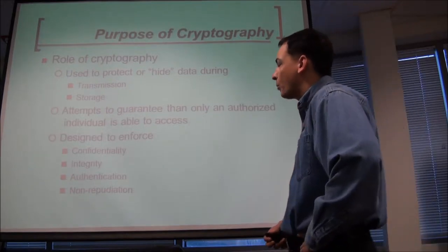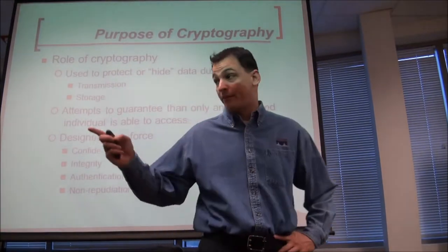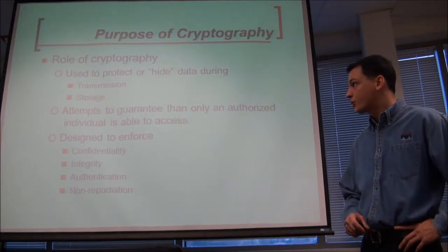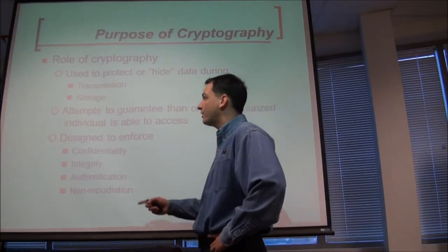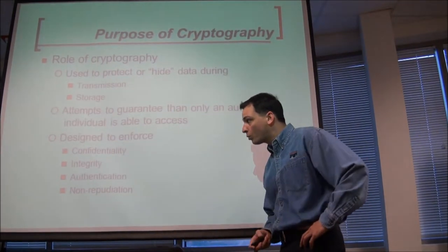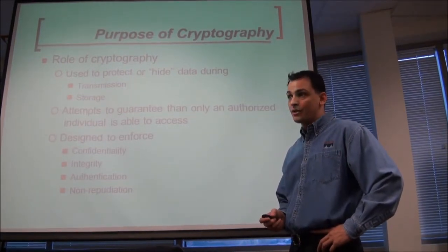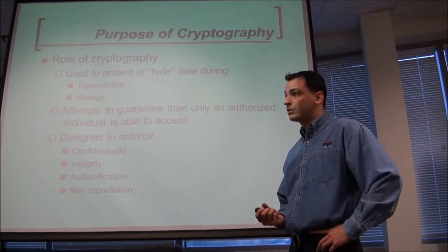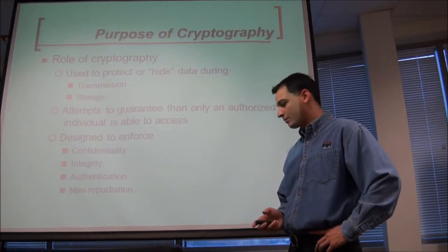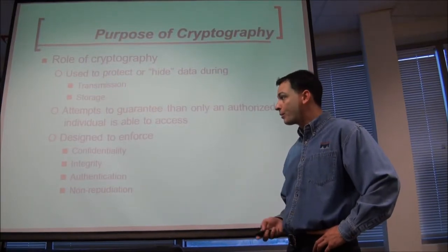What portion of the CIA triad are we going to be mostly working in this section? Confidentiality. There are some integrity checks, but mostly confidentiality. Whether the data is at rest in storage or in transmission, we need to make sure that only the people that need it get access to it. And while data is at rest or in transit, it keeps its integrity so you have trust in it. We can enforce that through authenticity and non-repudiation.